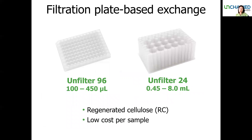BigTuna is a filtration plate-based buffer exchange platform. We have two SBS standard filtration plates called the Unifilter 96 and Unifilter 24. The 96 will let you run 96 samples with a volume range between 100 µL to 450 µL, and the 24 has a volume range between 450 µL to 4 mL. Both plate membranes are made of regenerated cellulose and are low in cost compared to individual dialysis cassettes or centrifugal units.